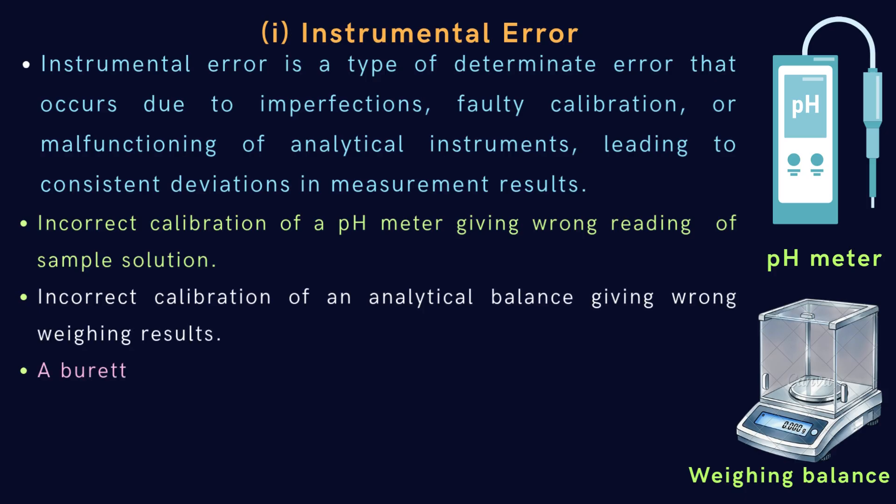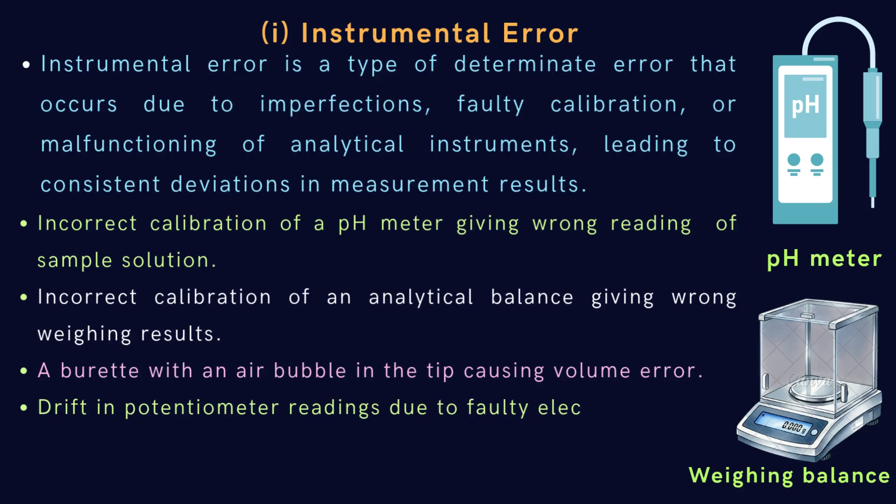A burette with an air bubble in the tip causing volume error. Drift in potentiometer readings due to faulty electrodes. Aging or worn-out glassware affecting accuracy of volume measurements. Thus, proper calibration and maintenance of instruments help minimize such errors.